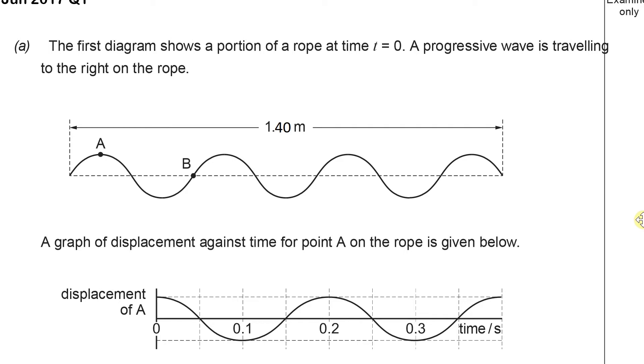We've got a diagram showing a portion of rope at time t equals 0 with a progressive wave traveling to the right on the rope. We can see on the diagram that there are several wavelengths in a distance of 1.4 meters, and we'll use that a little bit later on.